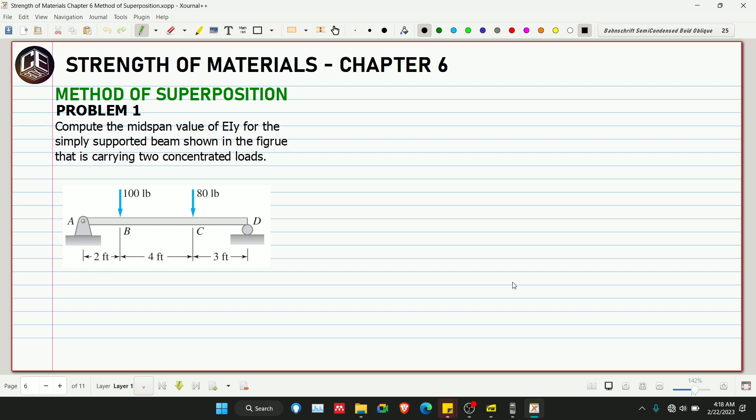Hey guys, this is Cbox tutorial channel and this is our problem number one for method of superposition. Before we start to solve this problem, please subscribe and hit the bell icon for notifications and updates on our YouTube channel. Compute the mid-span value of EIy for the simply supported beam shown in the figure that is carrying two concentrated loads.